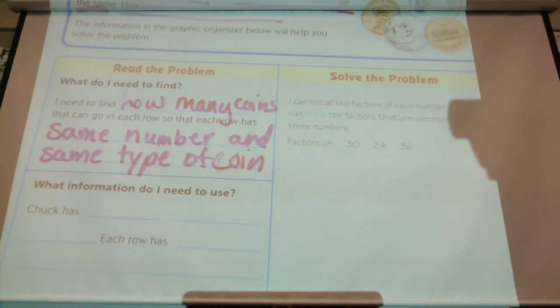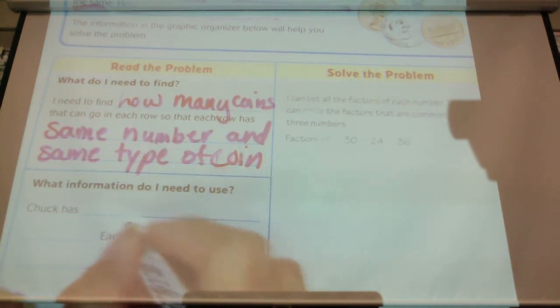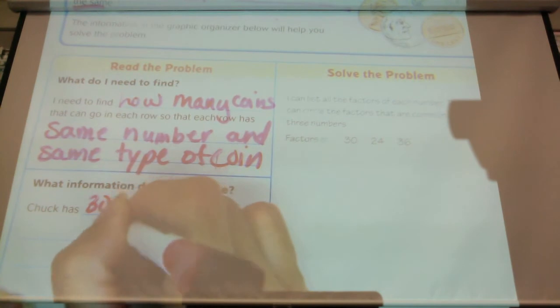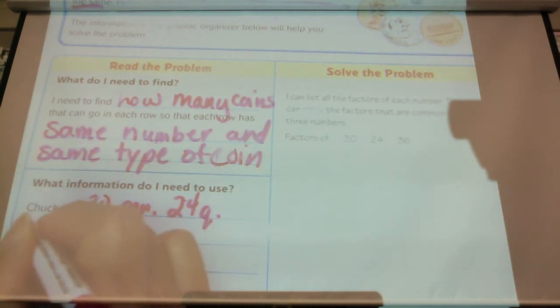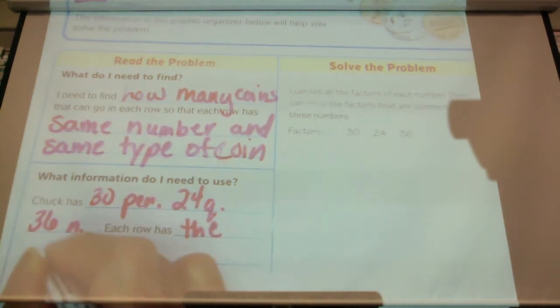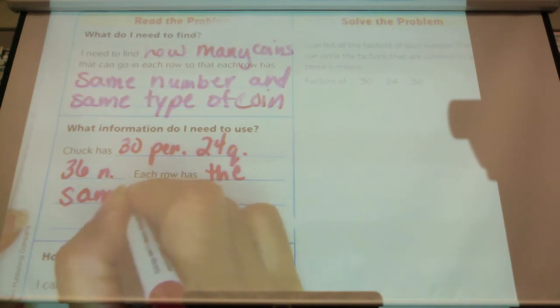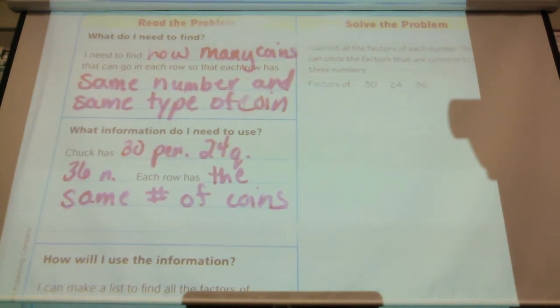What information do I need to use? So we'll start talking with, nobody should be writing, by the way. Chuck has how many pennies? Thirty pennies. Thirty pennies. Twenty, how much? Twenty-four. Quarters. And? Thirty-six nickels. Thirty-six nickels. Each row has, we don't know yet. I guess each row has the same number. The same number is probably what we're looking for. Number of coins. How can, can I make a list? I can make a list, I'm sorry, to find the factors of all three numbers. And that's going to help me with this problem.